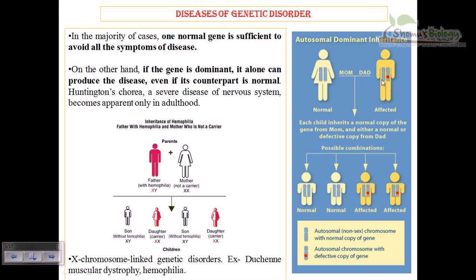In this case we have a normal mother and an affected father — the father carries the disease. Because it is autosomal dominant, we're not talking about sex chromosomes. Each child receives one copy from the mother and one from the father. If a child inherits the disease gene from the father, they get the disease. This is autosomal dominant inheritance.